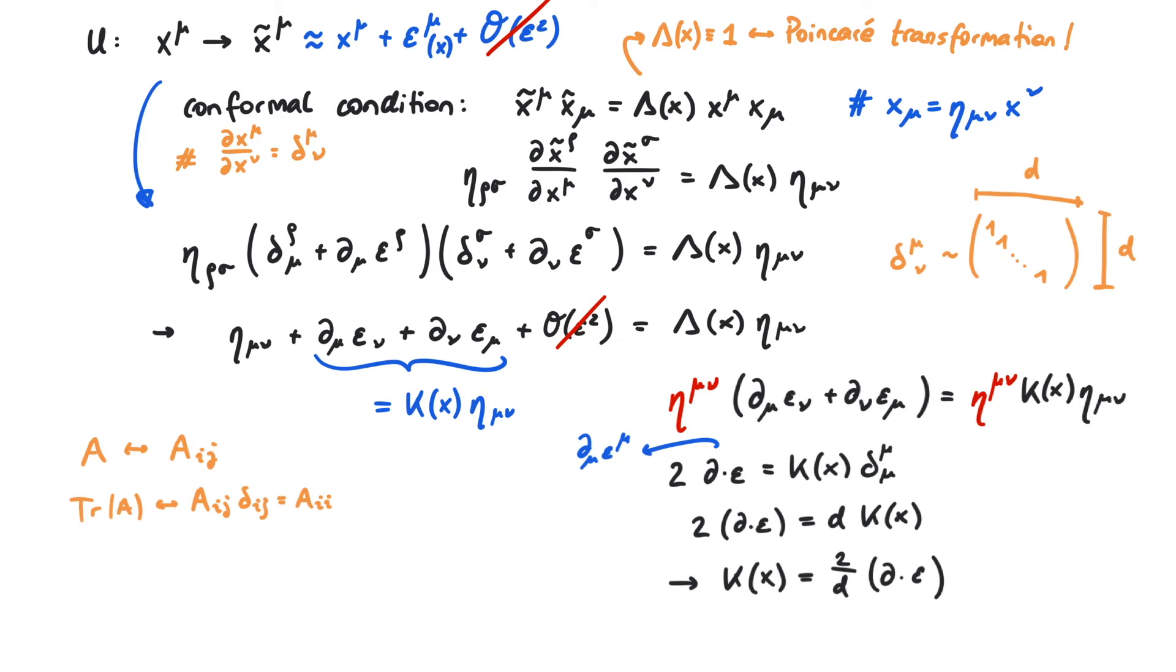Now we know what k of x is, and we can use it to formulate the condition for epsilon as d mu epsilon nu plus d nu epsilon mu is equal to two over d times the divergence of epsilon times the metric.